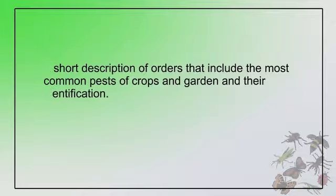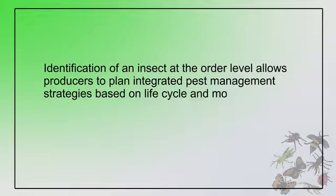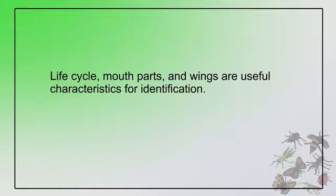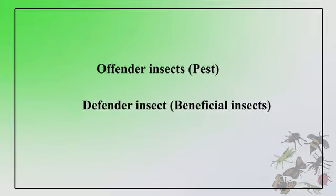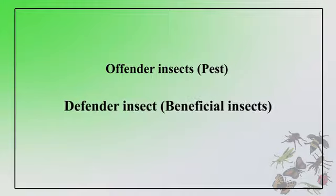Identification of an insect at the order level allows a producer to plan integrated pest management strategies based on life cycle and mouth parts. Life cycle, mouth parts, and wings are useful characteristics for identification. There are different groups of insects that fall under two broad categories: offender insects, commonly called pests, and defender insects, which are beneficial insects.